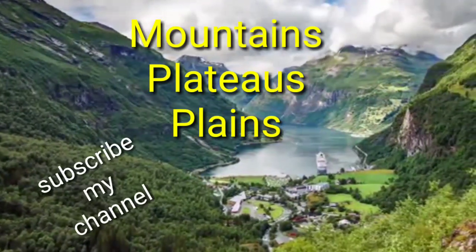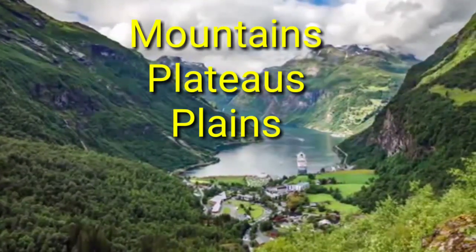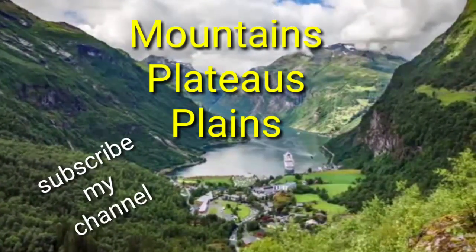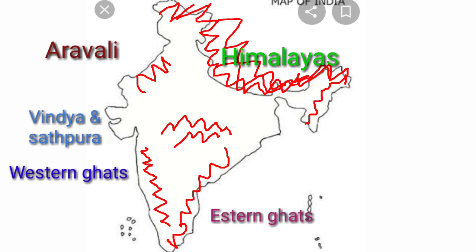Mountains and mountain ranges: on the east side, the Eastern Ghats; on the west side, the Western Ghats. In the middle of India, the Vindhya and Satpura mountain ranges, and the Aravalli mountain ranges.